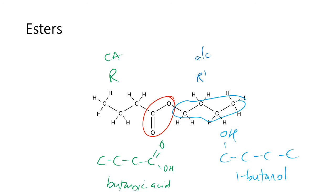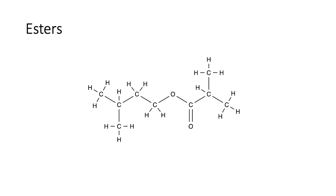It's important to recognize which carbon has the alcohol attached, because that's the carbon attached to the ester group. For this final example, the R group is on this side because it has the carbon with the double bond. Have a go at naming this — it looks like methylpropanoic acid and 3-methylbutanol.